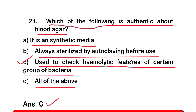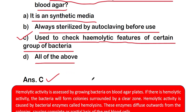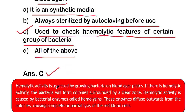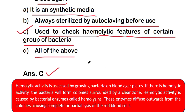Blood agar is used to check hemolytic activity of certain bacteria. Hemolytic activity is assessed by growing bacteria on blood agar plates. If there is hemolytic activity, bacteria form colonies surrounded by a clear zone. This is caused by bacterial enzymes called hemolysins, which diffuse outward from colonies causing complete or partial lysis of red blood cells present in the blood agar.